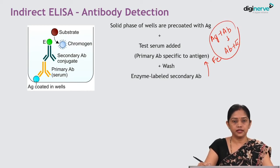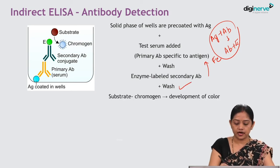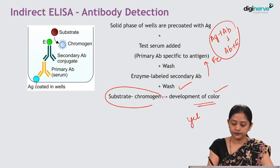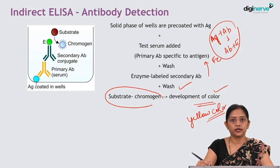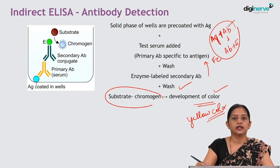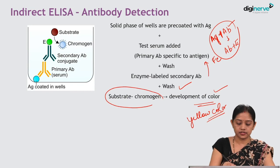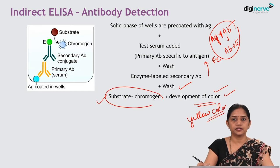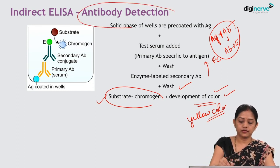After washing, when we add the substrate chromogen system, there is development of yellow color. The end result in ELISA is observation of color development. Only if the pre-coated antigen combines with the antibody present in the patient serum — forming the antigen-antibody complex that in turn binds to the enzyme-labeled secondary antibody — does the enzyme get activated, acting on the substrate chromogen system and finally producing color. Thus indirect ELISA is used for antibody detection.